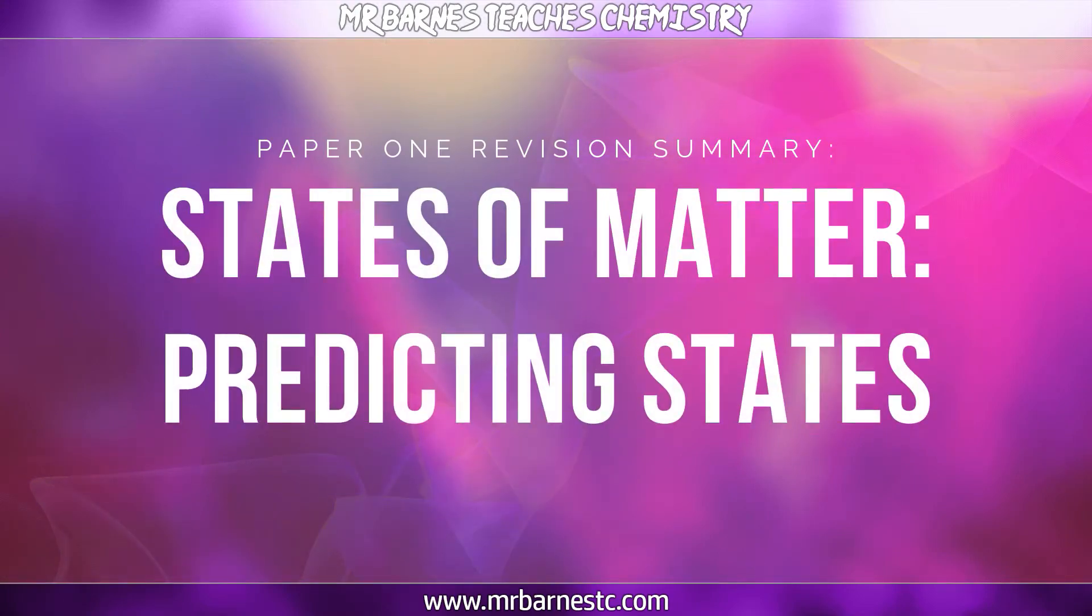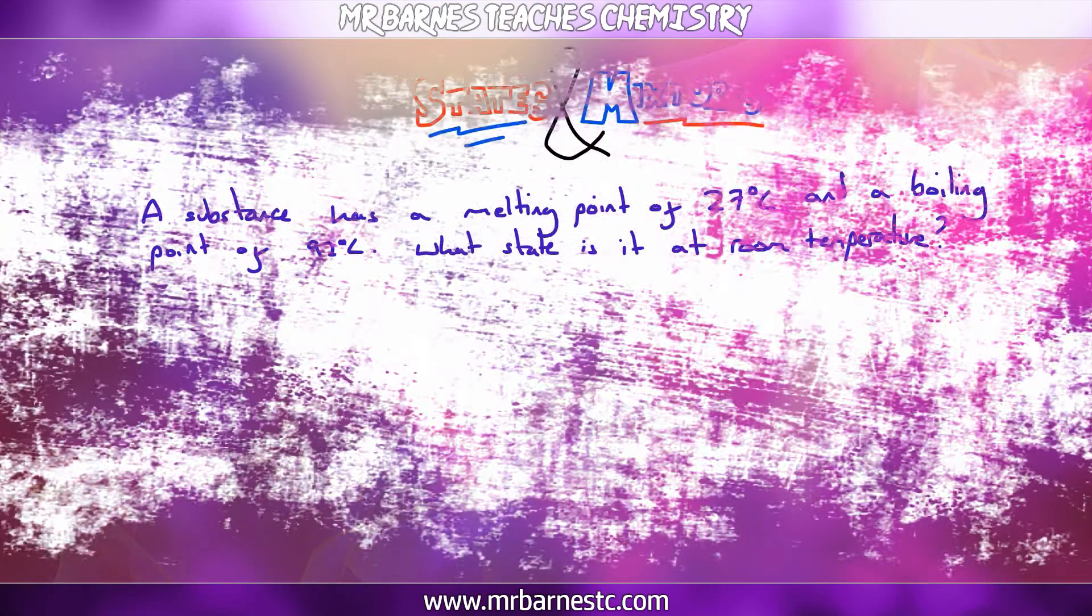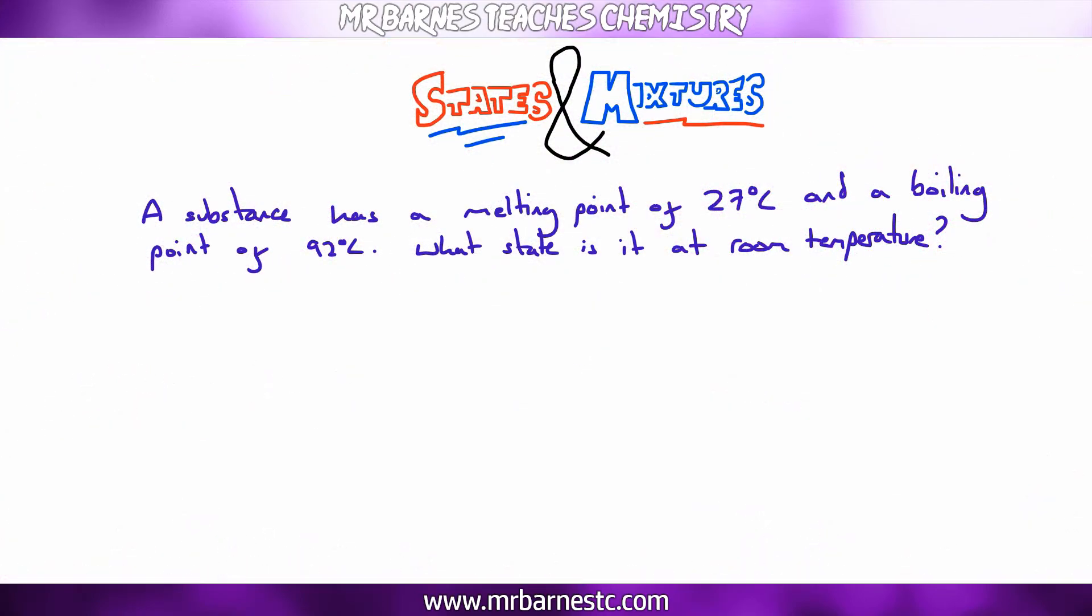Okay, the next section of this video is how do you know what state any substance is when you're given the melting points and the boiling points. So here I've got a sentence that says, a substance has a melting point of 27 degrees C, and a boiling point of 92 degrees C. What state is it at room temperature? So what I always do is I draw out this diagram here.